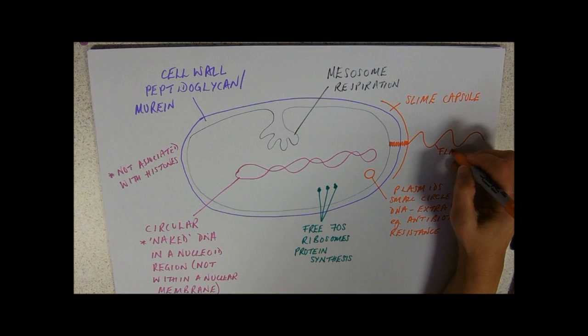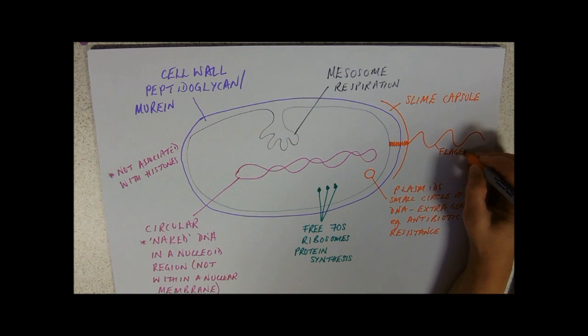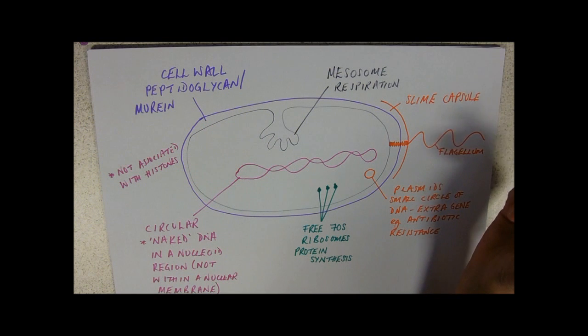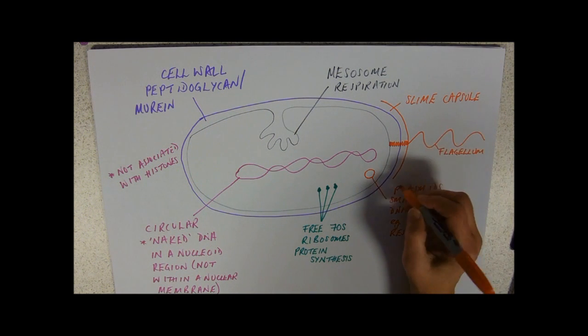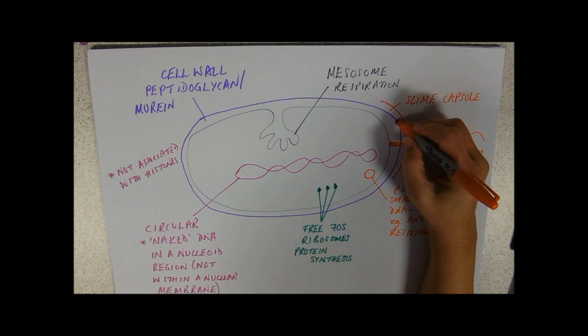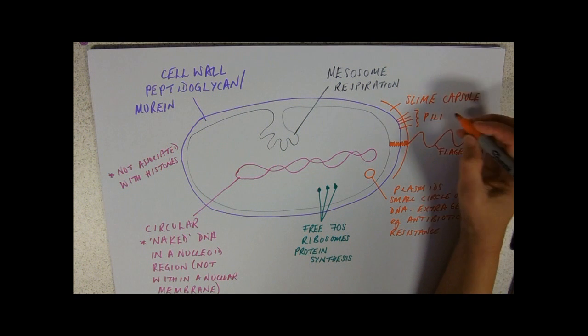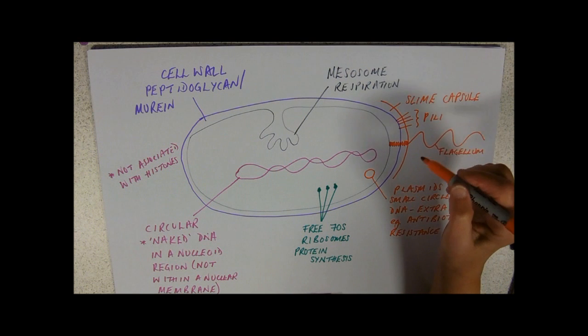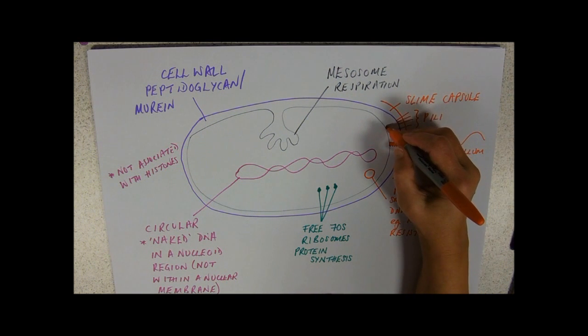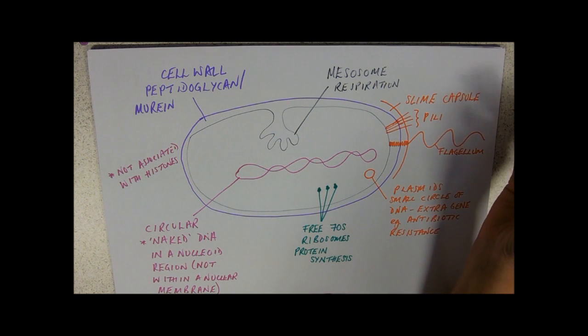The other one are a feature called Pili. They help bacteria have sex - I'm just whispering that. Pili are used in gene transfer between them. They're a bit like hollow straws really. They might also form the site of attachment of bacteria to cells, so they can be quite useful. You might have all of these or just a few of them.